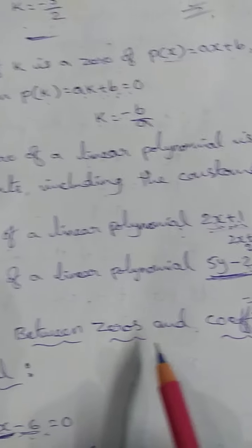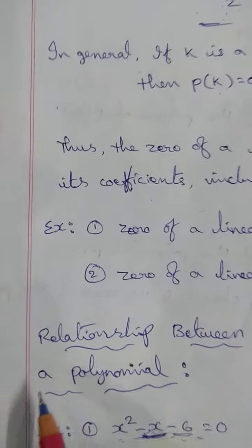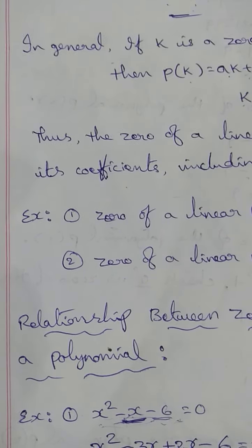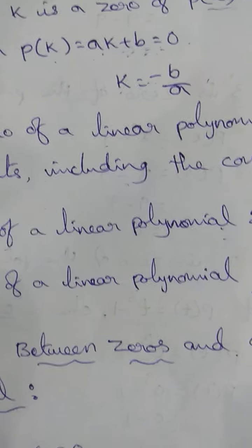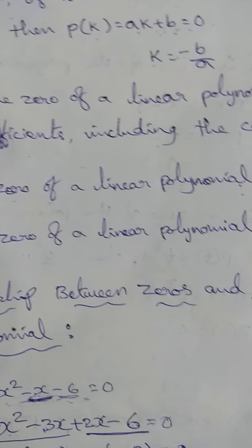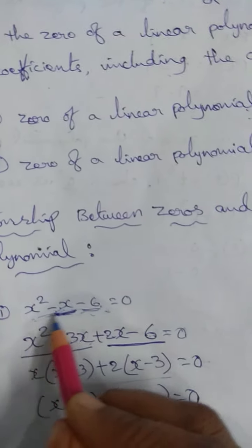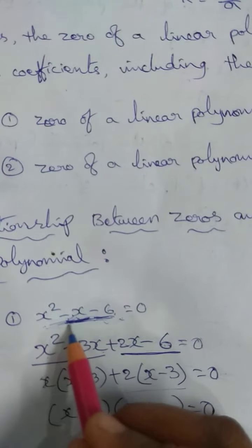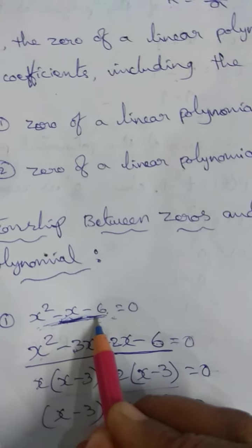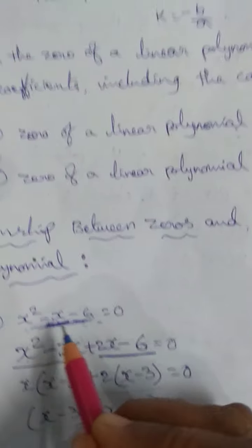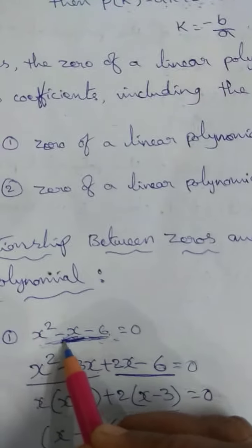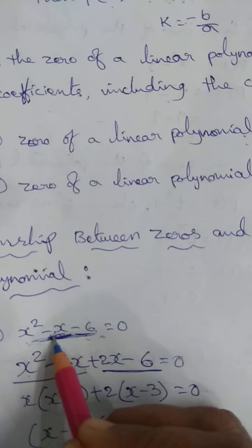Relationship between zeros and coefficients of a polynomial. We have already seen the zeros of a linear polynomial. Now we will try to explore the relationship between zeros and coefficients of a quadratic polynomial. Let's find the zeros of this quadratic polynomial using the split the middle term (factor method) as learned in 9th class.